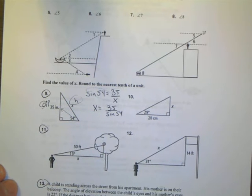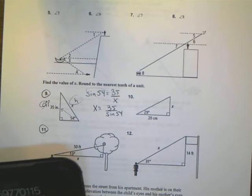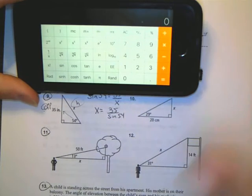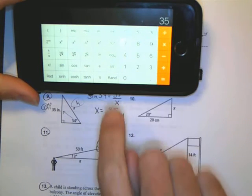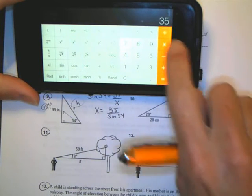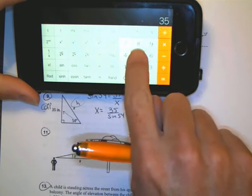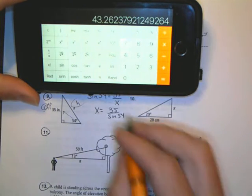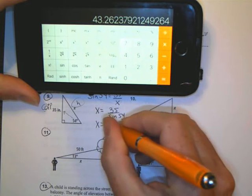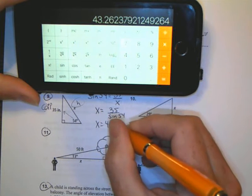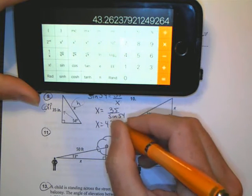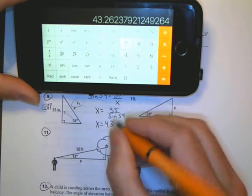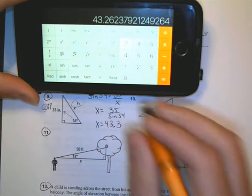To solve this one, I'm going to go ahead and do 35 divided by, I plug in 54, I hit sine, I hit equals, and X is going to equal 43.26. I want the nearest tenth, because a 6, I'm going to round it up to 43.3 for number 9.